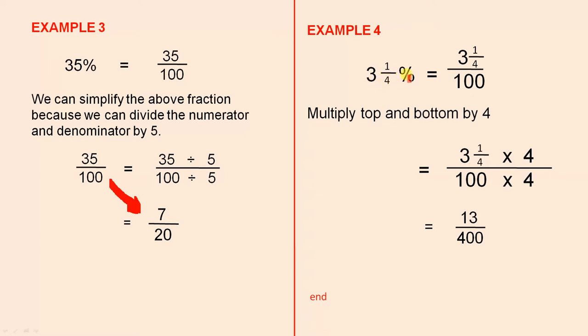3 and a quarter per 100, so it has to be 3 and a quarter over 100. Now what we have to do, we have to find a number to change this amount here to a whole number, because we have fractions here which we don't want. So because of that 4 here, that gives us a clue. If we multiply the top and the bottom by 4, because of the quarter, so 3 and a quarter times 4 over 100 times 4.